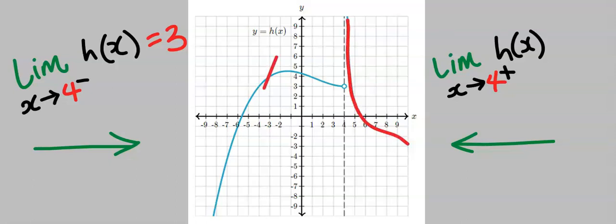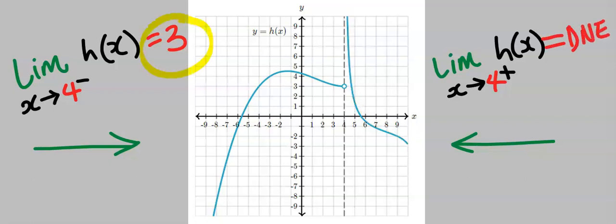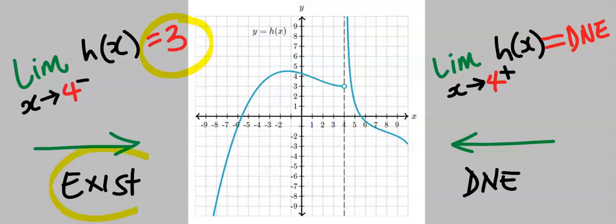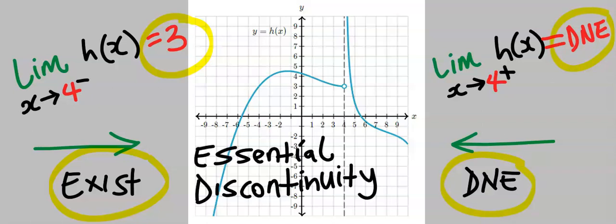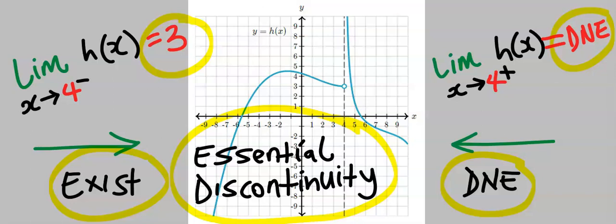From the right, this graph tends to infinity, so the right-hand limit does not exist. Whenever one side of the limit exists and the other does not, this is known as essential discontinuity. Because both sides must be equal for the limit to exist, we conclude that the limit of h(x) does not exist.